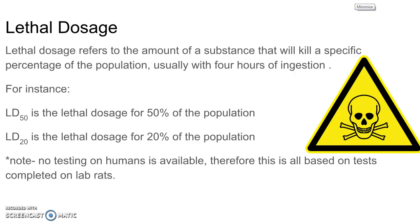So for instance if the LD is 50 — LD50 — it means that 50% of the population will die within four hours. So if you have ten mice, five of them will die by the end of four hours. If the LD is 20, then 20% of the population will die after four hours, so if you have ten mice or ten rats, two of them will die by the end of four hours.